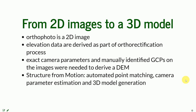The next term is structure from motion, which is the automated point matching, camera parameter estimation, and 3D model generation. It describes how to derive 3D information from 2D pictures.